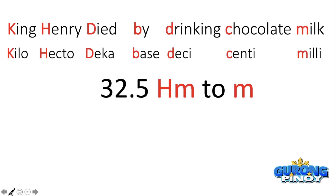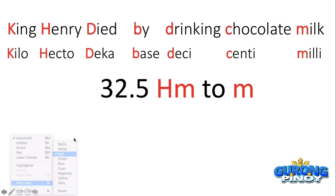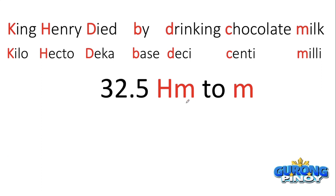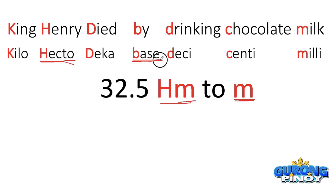Our first example is 32.5 hectometers. That's HM — hecto — and the base unit is meter. We want to convert this to meters. Using the slider, from hectometer we travel to the base unit of meter. Meter is the base unit because it has only one letter with no prefix. So from hecto to meter, that's one and two movements to your right.